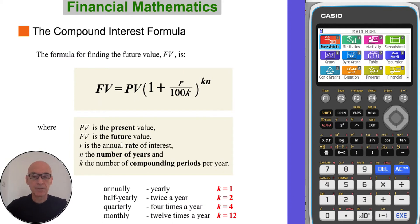The compound interest formula for finding a future value FV is shown here, where PV represents the present value, R is the annual rate of interest, N is the number of years and K, which appears twice in the formula, the number of compounding periods per year.